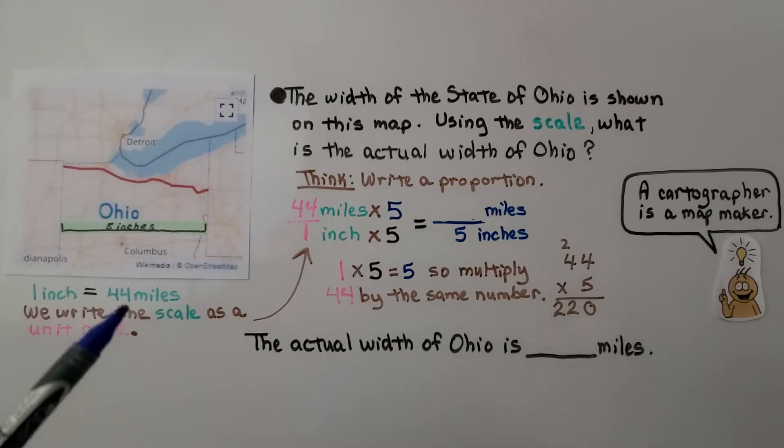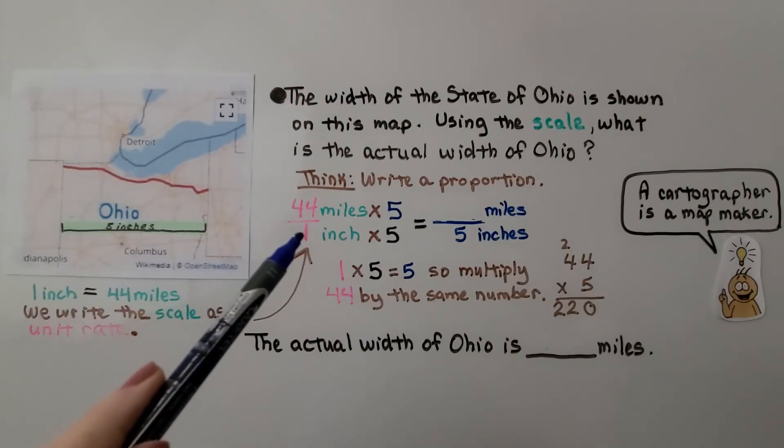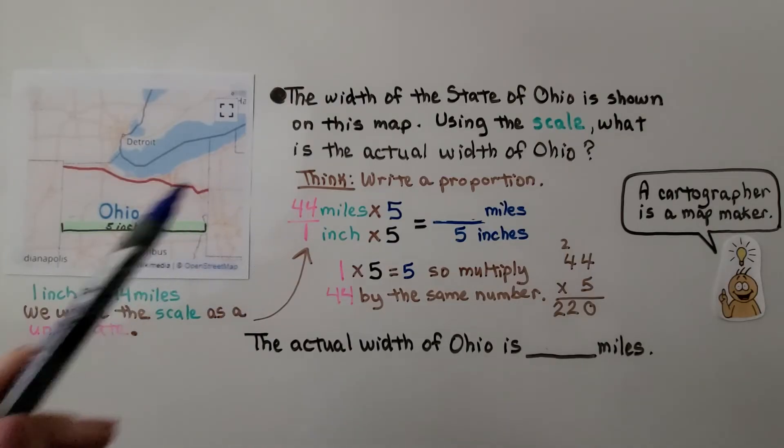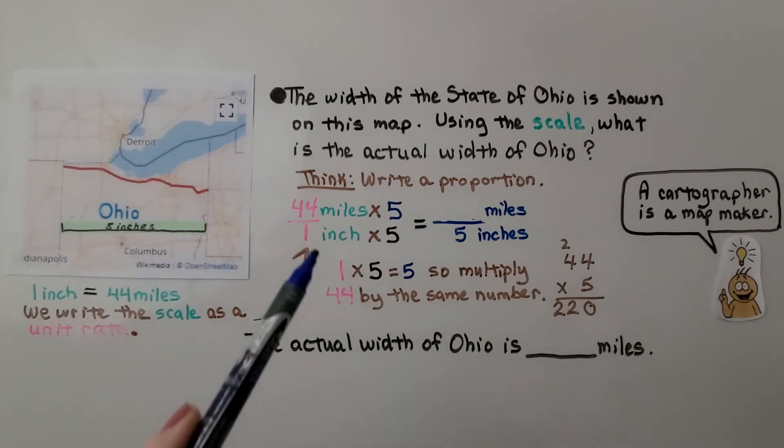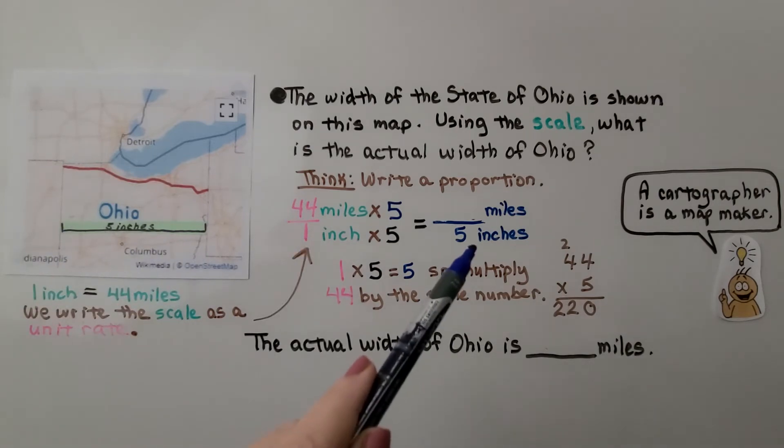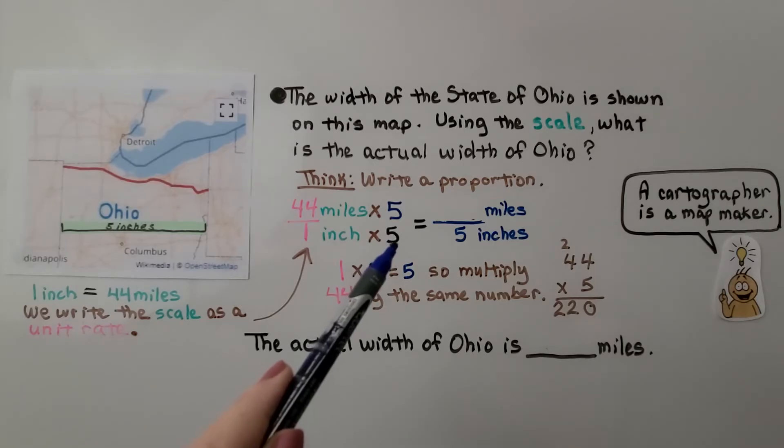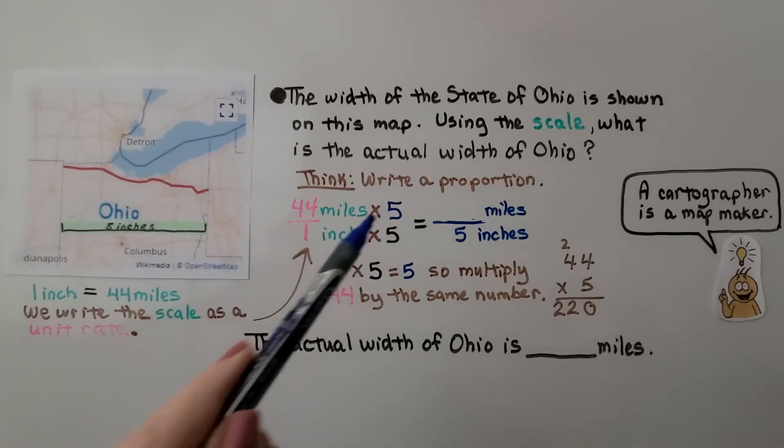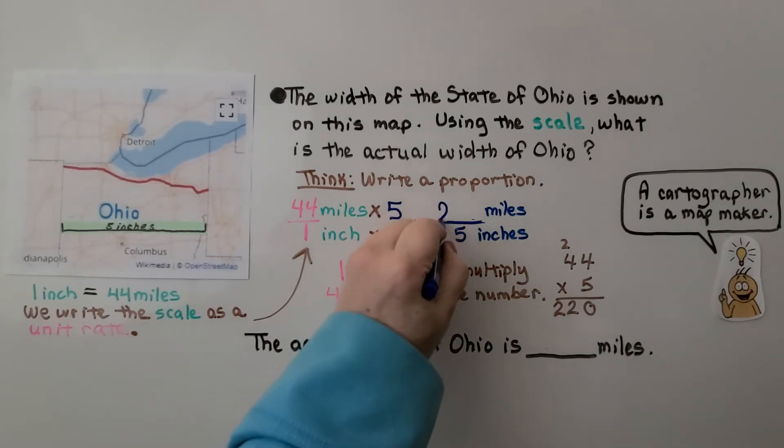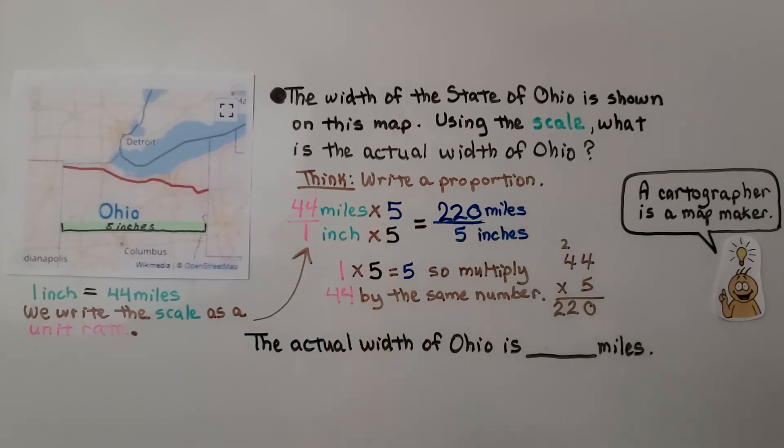We can write a proportion. We have 44 miles to 1 inch. And since it's saying in the map that this is 5 inches across, we need our 1 inch to equal 5 inches. So we multiply it by 5, which means we need to multiply 44 miles times 5. Do a little multiplication on the side, and we see it's 220. So the actual width of Ohio is 220 miles.